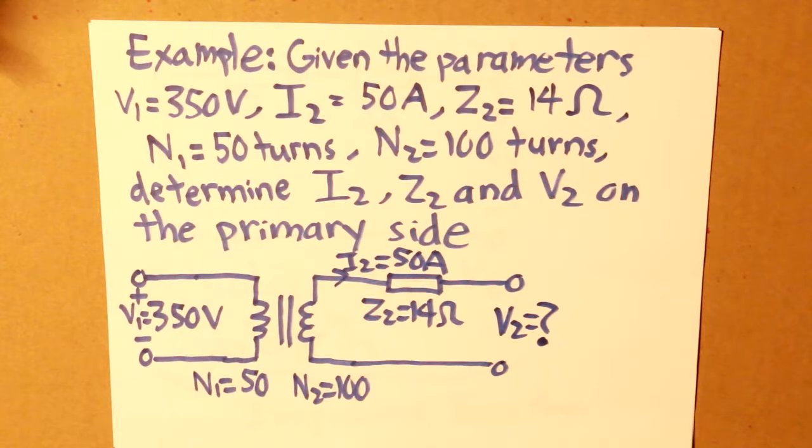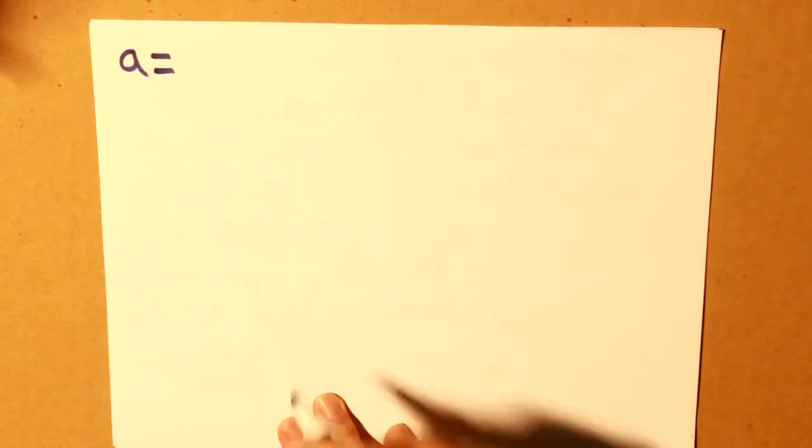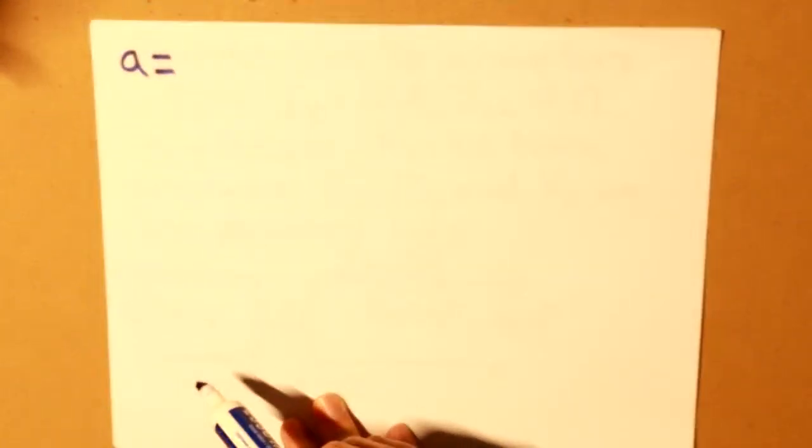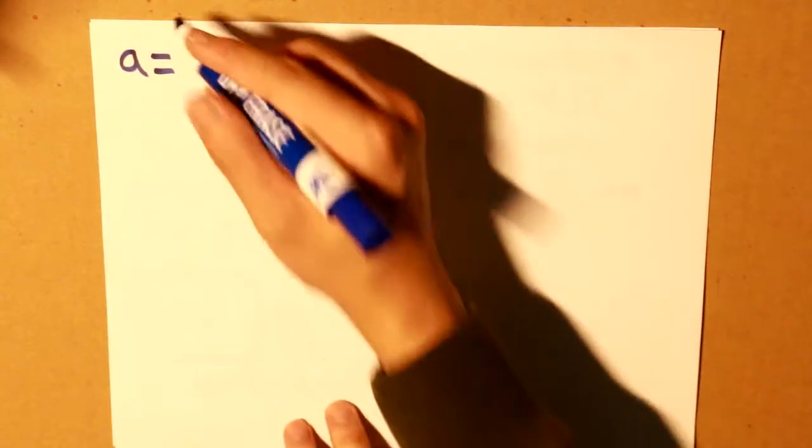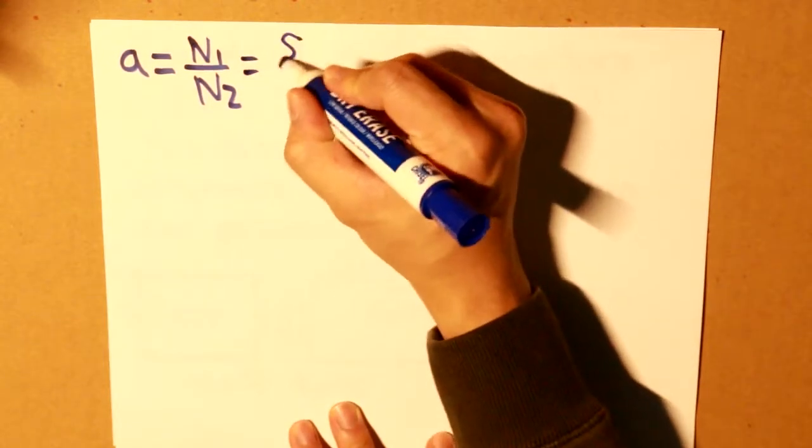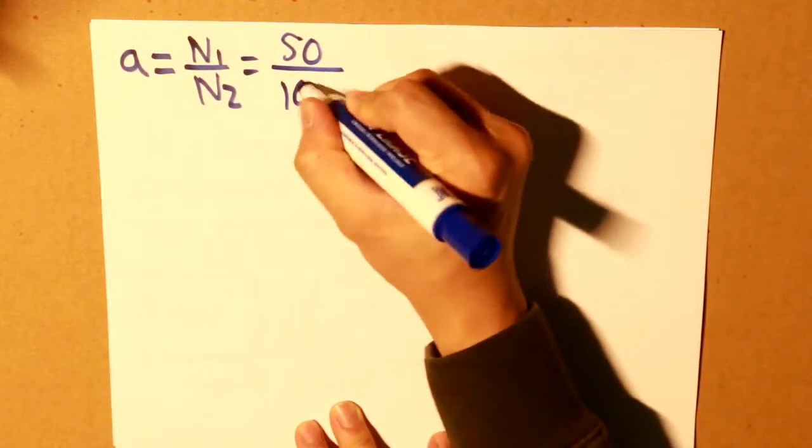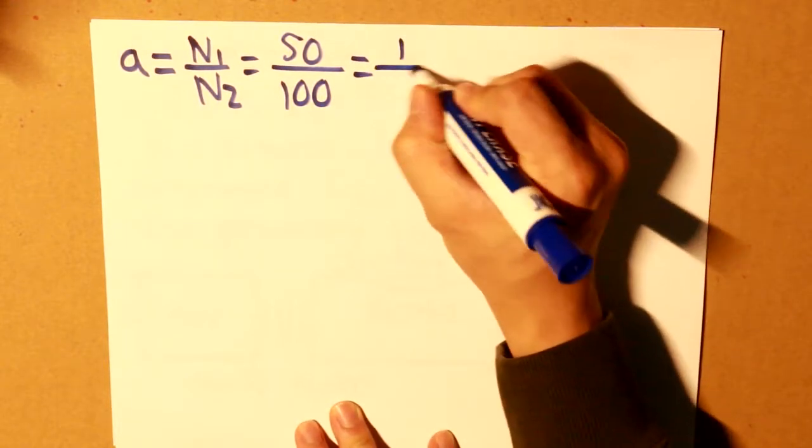So first and foremost, we're given our transformer circuit. Let's start off to find our turn ratio or amplification, also known as lowercase a. So lowercase a is equal to n1 divided by n2, and what we know is that n1 is 50 and n2 is a hundred, and that is equal to 1 over 2.